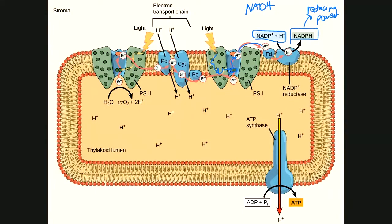In the overall reaction of photosynthesis, we're reducing carbon dioxide into glucose, so we're going to need reducing power to do that. The electrons delivered to NADP+ from Photosystem I have to be replaced by something — and what happens is that the electrons that ended up at the bottom of the electron transport chain from Photosystem II replace the electrons that shot up an energy level from Photosystem I.